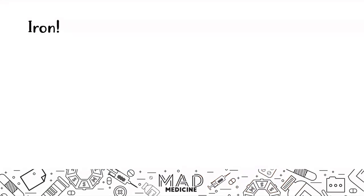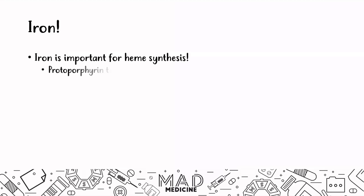This is going to be a review of previous lectures. Iron is very important for heme synthesis — it converts protoporphyrin into heme by binding to protoporphyrin and facilitating heme production.